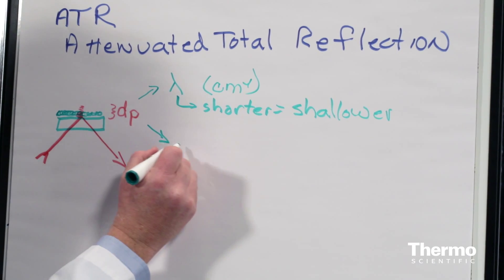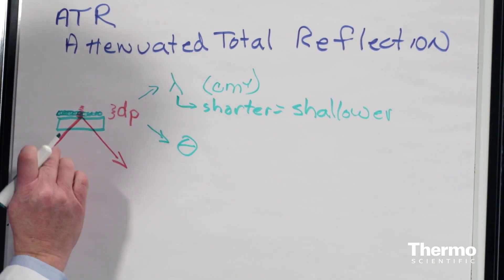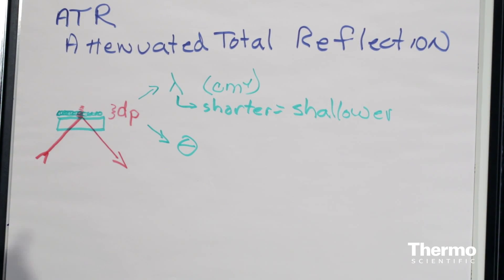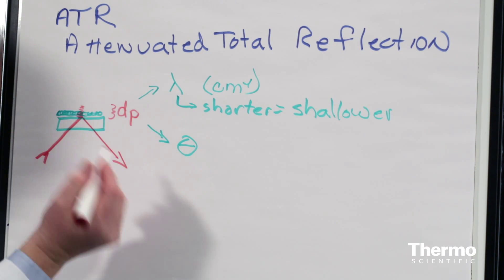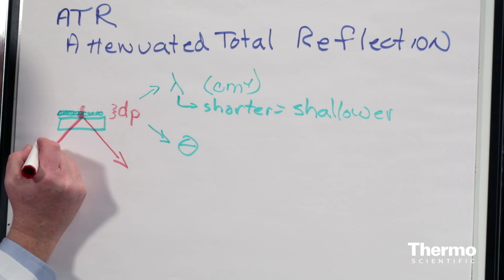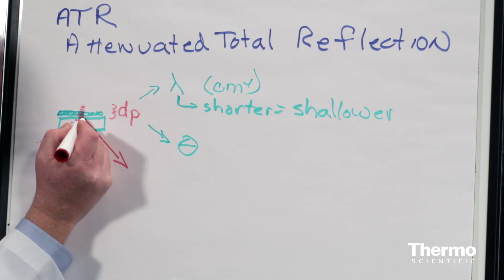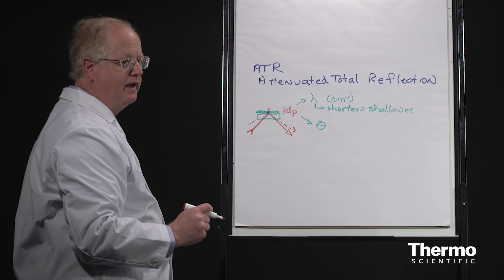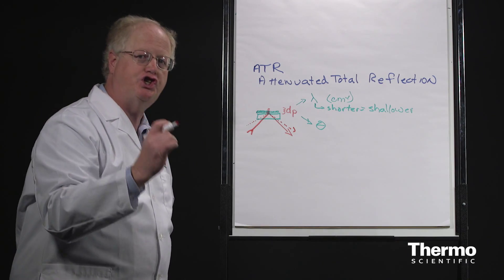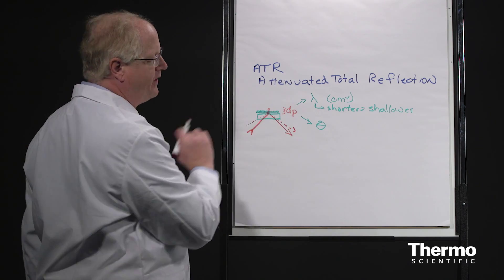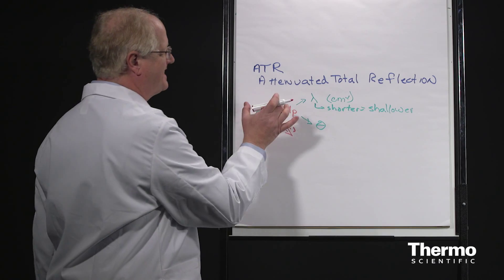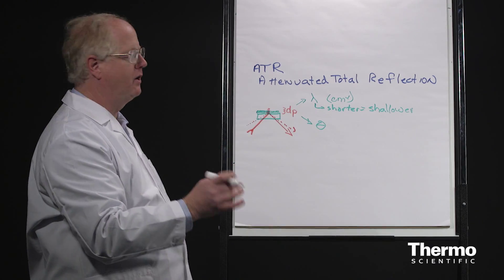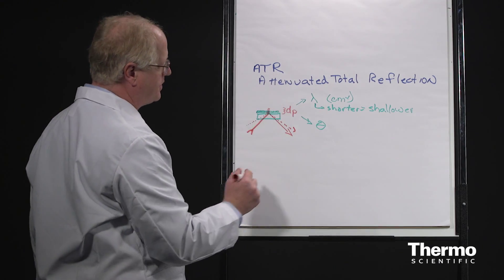Another thing that affects it is the angle at which the infrared light comes in. I've shown it coming in at about 45 degrees here. If we come in more steeply, the depth of penetration is correspondingly shallower. So if you have a 45 degree crystal or a 60 degree crystal, the 60 will always have a shallower depth of penetration.